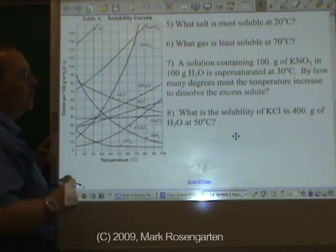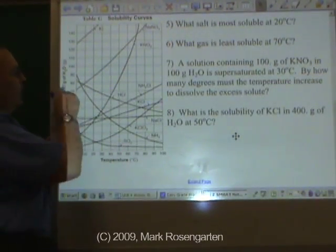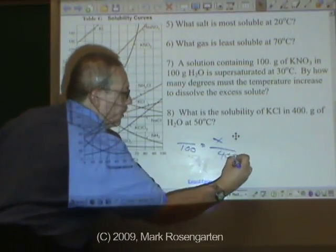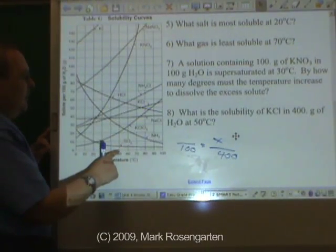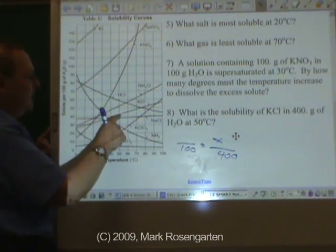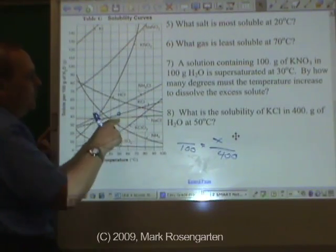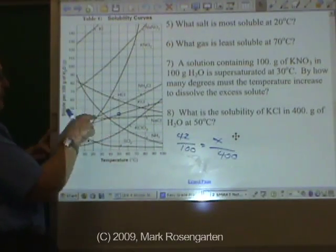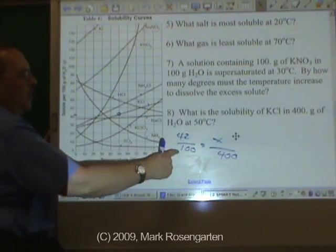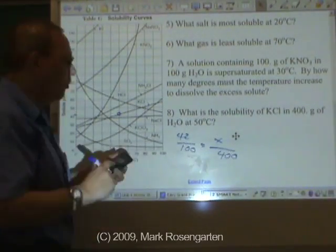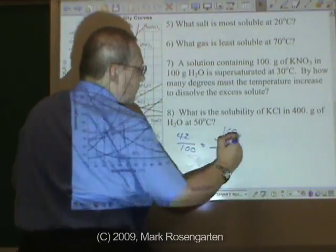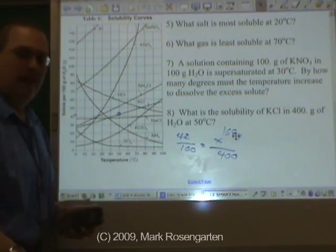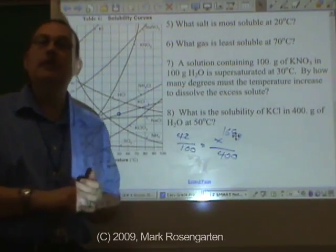What's the solubility of KCl in 400 grams of water at 50 degrees Celsius? Let's get information about 100 grams first and then find out about 400 grams. At 50 degrees Celsius, the KCl line — see the arrow pointing to it — that's about 42 grams. So 42 is to 100 as what is to 400 — 168 grams. Four times as much water, you can dissolve four times as much solute in it. And that's how you use reference Table G, the solubility table.